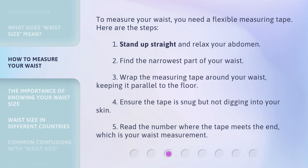To measure your waist, you need a flexible measuring tape. Here are the steps: 1. Stand up straight and relax your abdomen. 2. Find the narrowest part of your waist. 3. Wrap the measuring tape around your waist, keeping it parallel to the floor. 4. Ensure the tape is snug but not digging into your skin. 5. Read the number where the tape meets the end, which is your waist measurement.